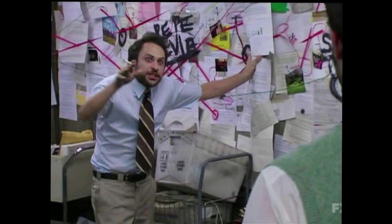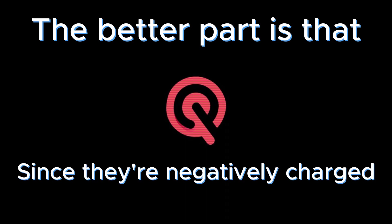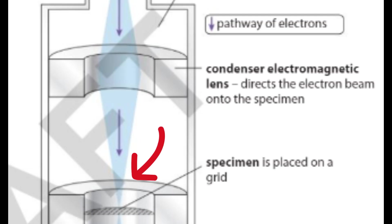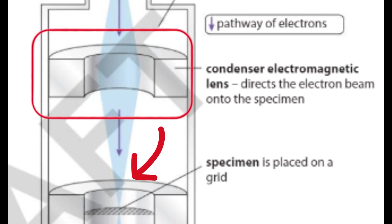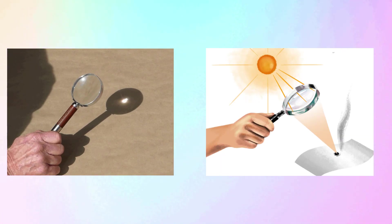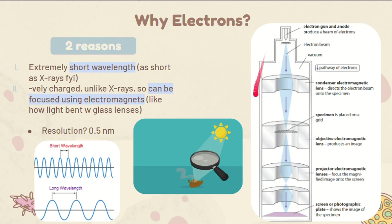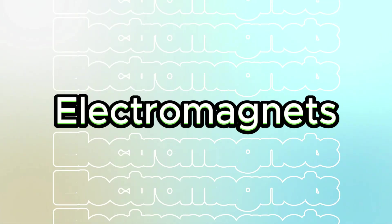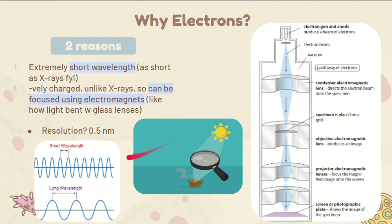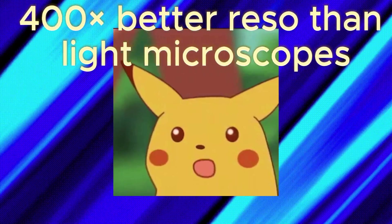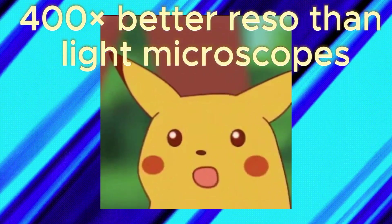The wavelengths are as short as X-rays, but that's not all. The better part is that since they're negatively charged, they can be focused using an electromagnet. You know how light can be focused with a magnifying glass or just glass lenses in general? We can use magnets, or better yet electromagnets, to do the same with electrons.